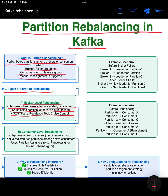Example — before broker failure: Broker 1 is the leader for partition 0, broker 2 for partition 1, and broker 3 for partition 2. After broker 1 fails, Kafka reassigns leadership: broker 2 becomes the new leader for partition 0, and broker 3 takes over partition 1.